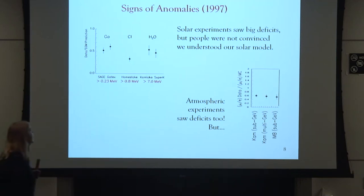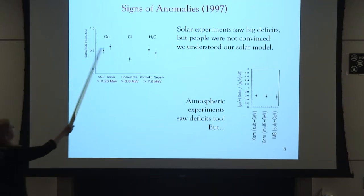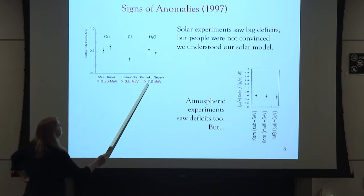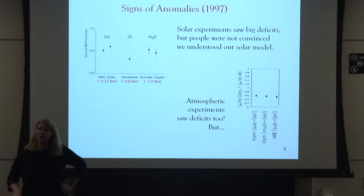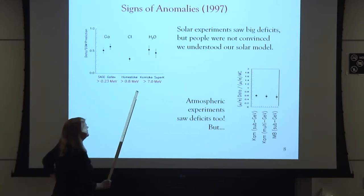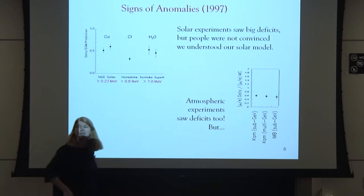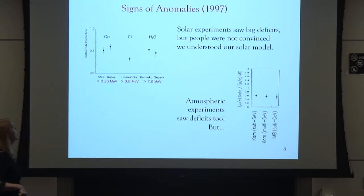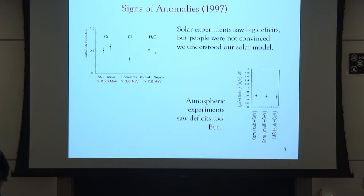Here was the status of the solar neutrino experiments. Each set of experiments had a different threshold, and it was very difficult to fit all those data sets together with neutrino oscillations. Many people were not convinced we understood our solar model. There's a famous quote from Howard Georgi: 'I believe that the solar deficit has nothing to do with particle physics.' It took a long time and information from helioseismology before we really felt secure with all of that.